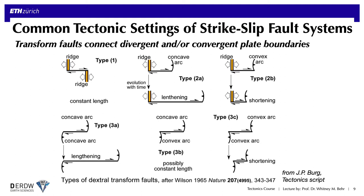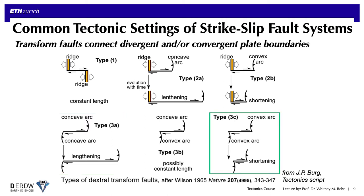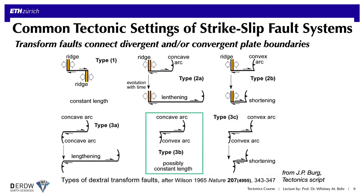The situation is similar for transforms that connect two trenches. If the transform is in the hanging wall of both subduction zones it will continue to grow, whereas if it's in the footwall of both it will shorten and eventually be consumed. If it's in the footwall of one and the hanging wall of another, whether the transform lengthens or shortens depends on the relative rates of motion of each subduction trench.